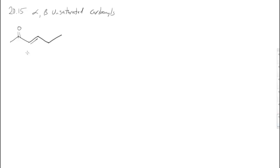All right, in the last section of this chapter, 20.15, we'll look at alpha beta unsaturated carbonyls. What we'll find out is that alpha beta unsaturated carbonyls react differently than either carbonyls do on their own or alkenes do on their own.